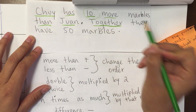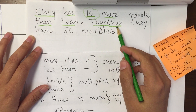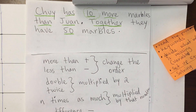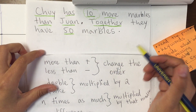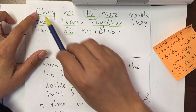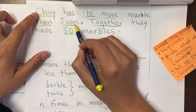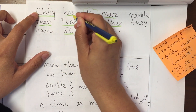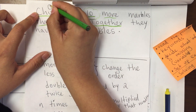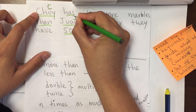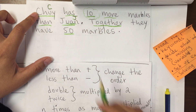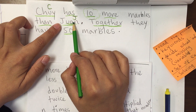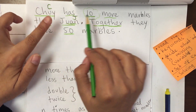'Together' is also an important keyword — together means addition as well. So we're comparing Chuy's marbles to Juan's marbles. We're going to put C for Chuy and J for Juan. When we're comparing somebody to somebody else's marbles, we just write it the way it is, keeping in mind that sometimes the order changes.